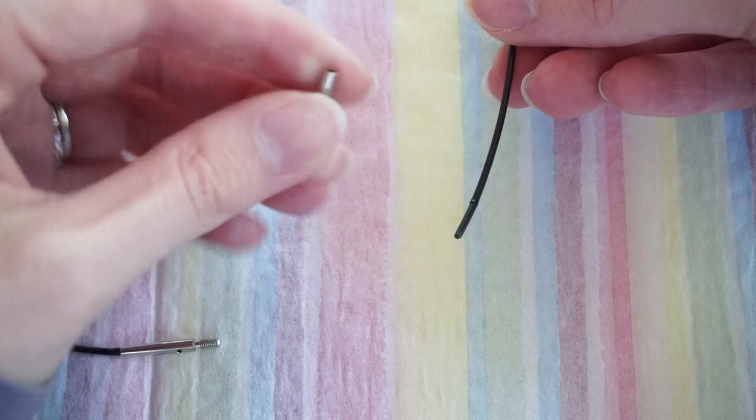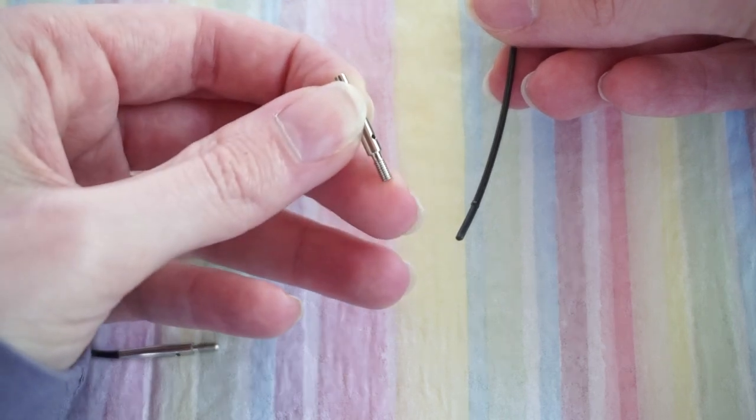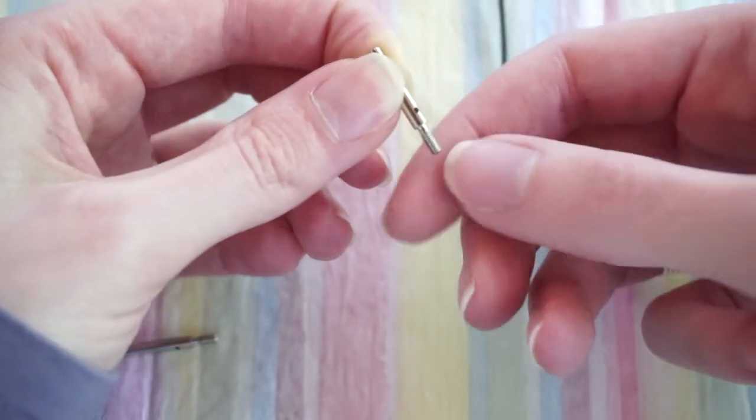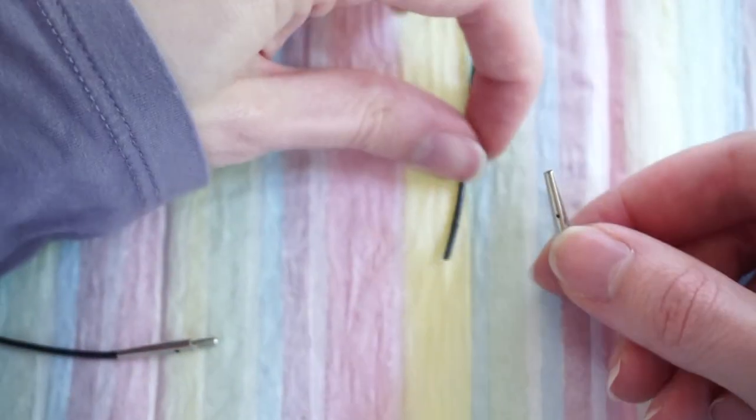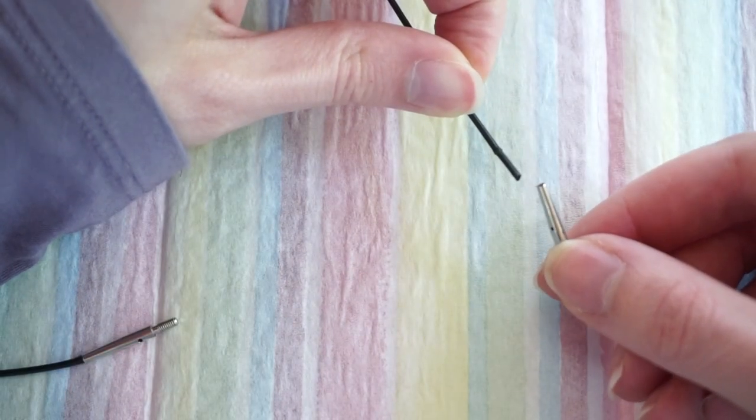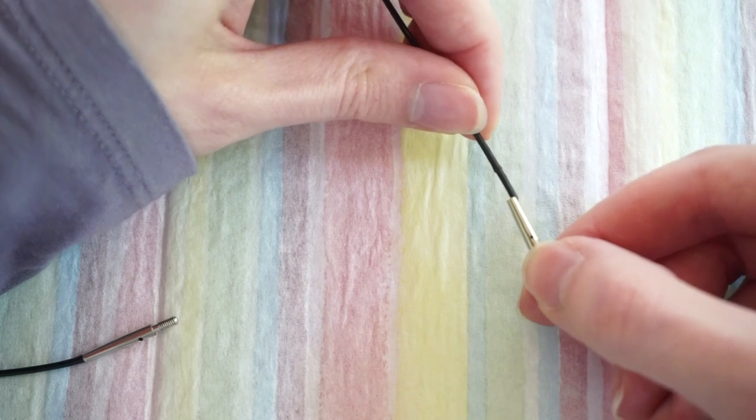So what happens to me is that the place where you actually screw on the knitting needle, so you can see this is like a little threaded end right here, it comes off of the cord and what I often have to do is glue these back on.